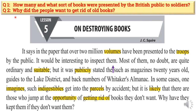Number five: how he finally mustered up his courage to throw the books and his feelings. In this introductory part we will discuss two questions: how many and what sort of books were presented by the British public to soldiers, and why did the people want to get rid of books? It says in the newspaper that over two million volumes have been presented to the troops by the public. It would be interesting to inspect them — most of them no doubt are quite ordinary and suitable.